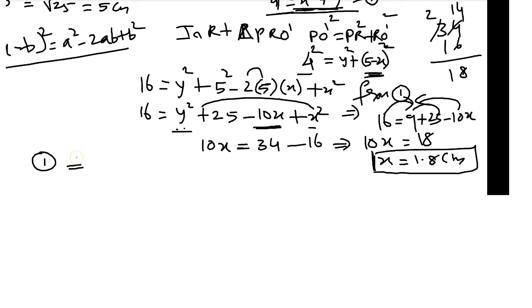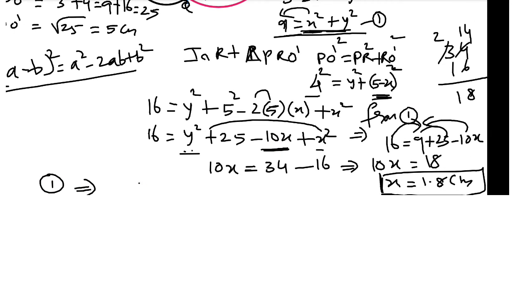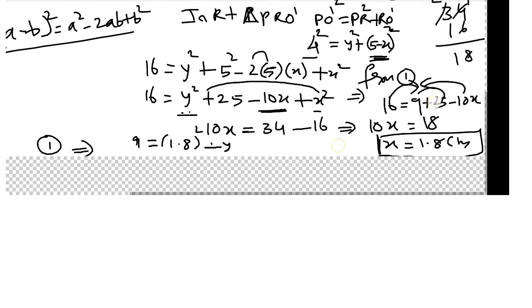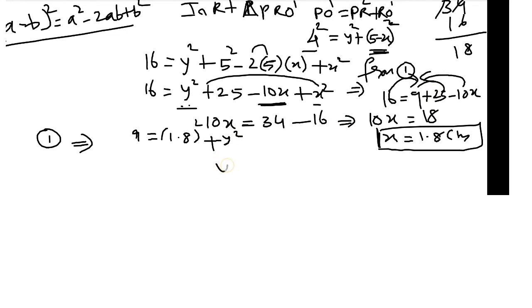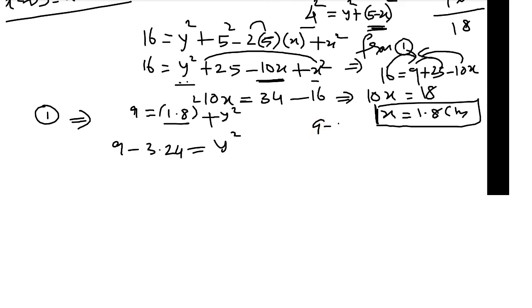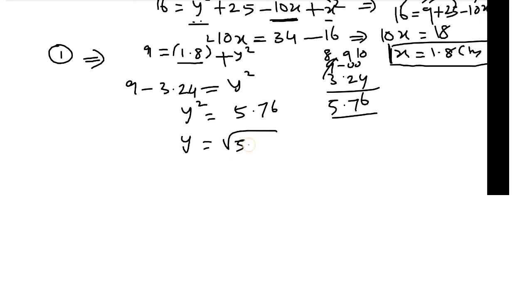Now 9 equals x square plus y square. If x equals 1.8, then 9 minus 1.8 squared equals y square. That is 9 minus 3.24 equals 5.76. So y equals square root of 5.76, that is 2.4 cm.